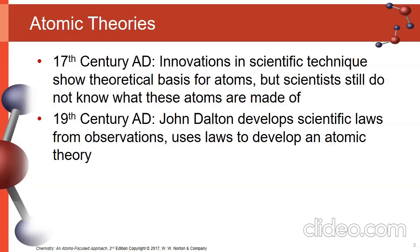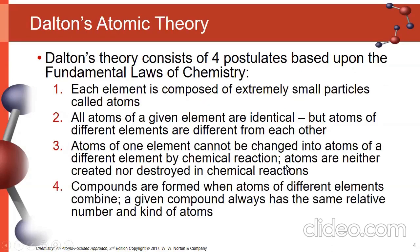Based on observations and scientific laws of the time, John Dalton in the 1800s developed an overall grand theory of atoms, broadly referred to as Dalton's atomic theory. Inside Dalton's atomic theory there are four primary postulates — four statements of belief generally accepted as true based upon the known evidence at the time.